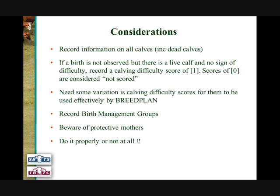Likewise, if a birth is not observed — so you don't actually see the cow calving in the paddock — but when you go into the paddock there's a perfectly live, healthy calf and no sign of calving difficulty, then we would score that animal with a Calving Difficulty score of 1, born unassisted. A common misconception is that people actually have to observe the cow calving to score a Calving Difficulty score — that's certainly not the case. Of importance is that we need some variation between animals in Calving Difficulty scores for them to be used effectively by BreedPlan. So if all animals are calving unassisted or are scored with a Calving Difficulty score of 1, it won't result in high Calving Ease EBVs; rather, we haven't identified any differences between animals for calving difficulty, and the information does not contribute effectively to the calculation.